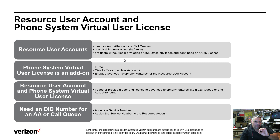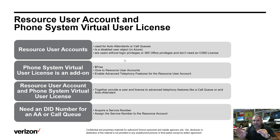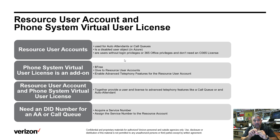That user needs a Phone System license, and those cost money. So what Microsoft did was create a resource user — it's just a user in Office 365 with no licenses associated with it. You don't have to give it an E1 through E5 license. However, you can give it a Phone System Virtual license, making it essentially a free user.